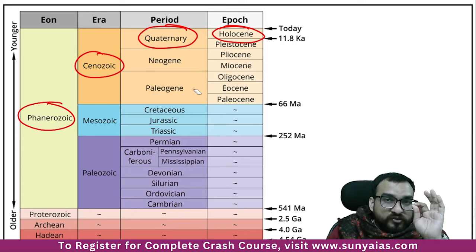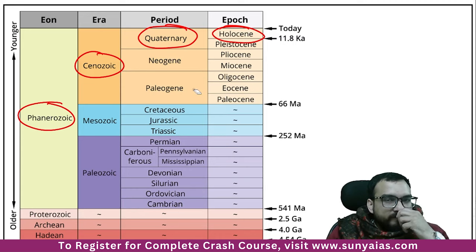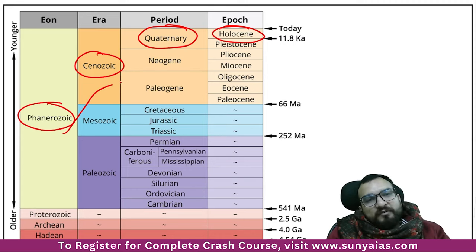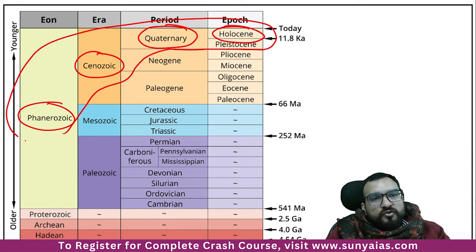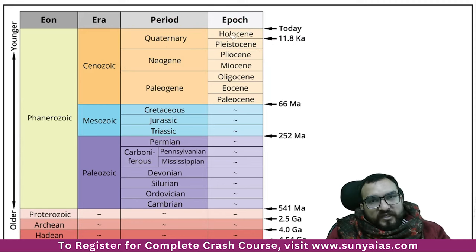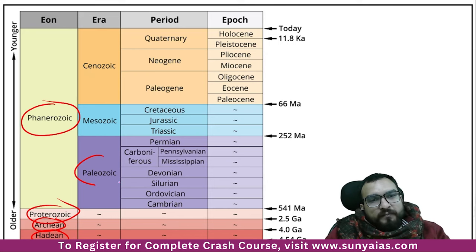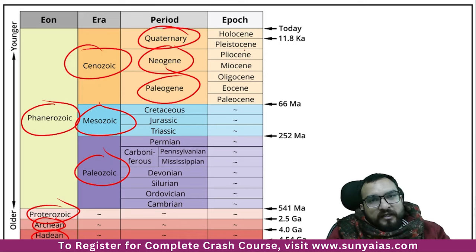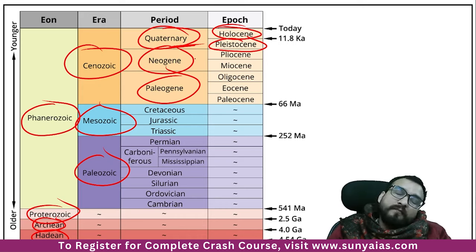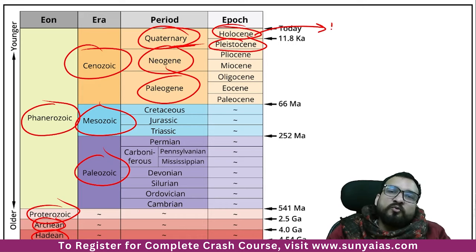You are learning selectively — there are four eons: Hadean, Archean, Proterozoic, Phanerozoic. Under Phanerozoic, three eras: Paleozoic, Mesozoic, Cenozoic. Under Cenozoic, three periods: Paleogene, Neogene, Quaternary. Under Quaternary, two epochs: Pleistocene and Holocene. Now we will open up prehistoric times — the whole of ancient history will come in your Holocene epoch.